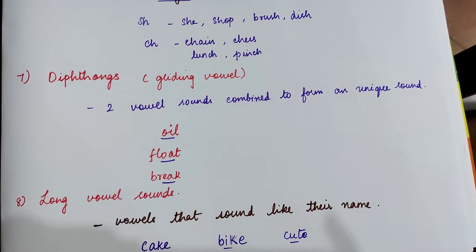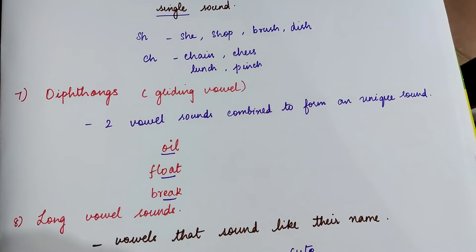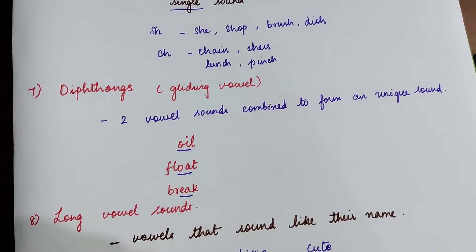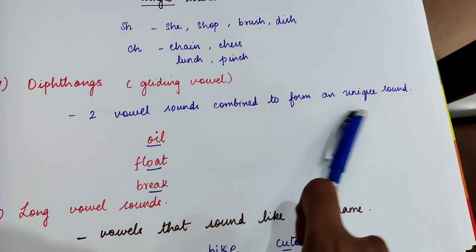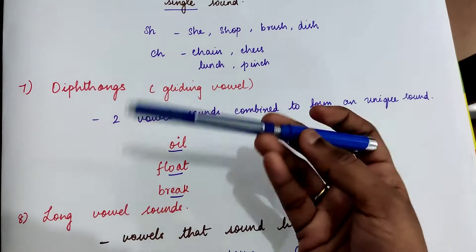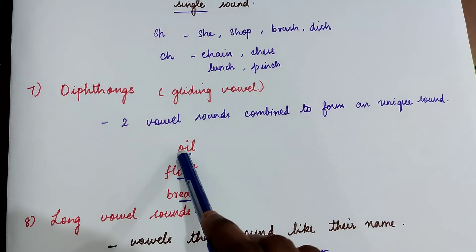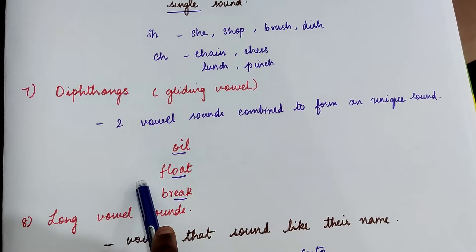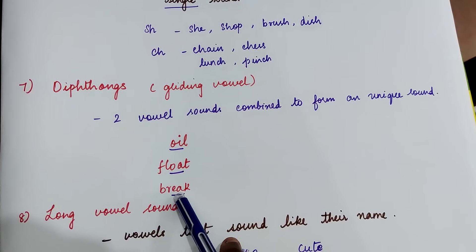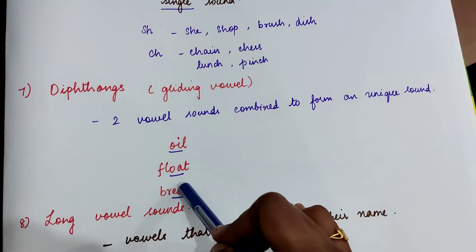The next topic is diphthongs. It is also called gliding vowels. Here two vowel sounds combine to form a unique sound. This is similar to digraphs but diphthongs are for vowels. So here is an example: oil, float, break. Here the vowels combine to form a new sound.